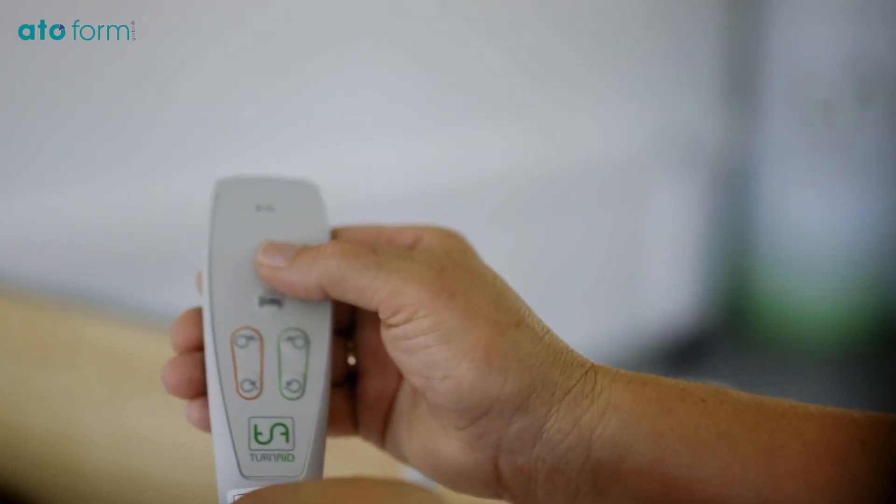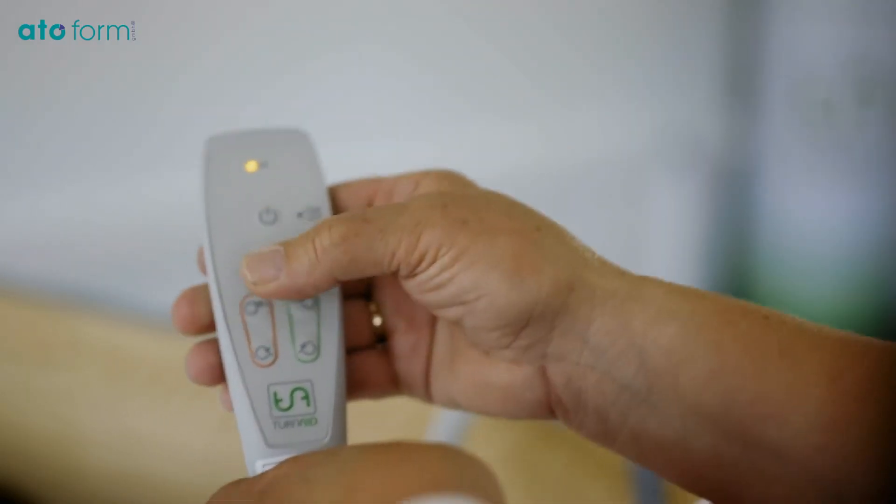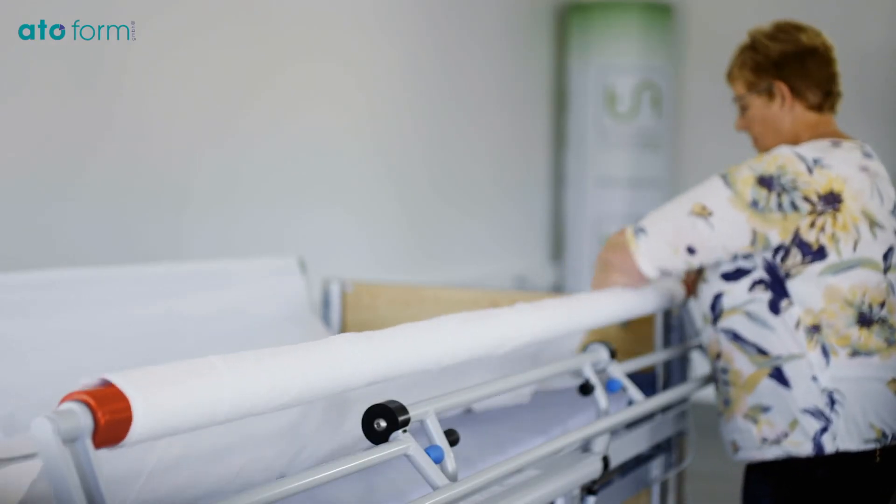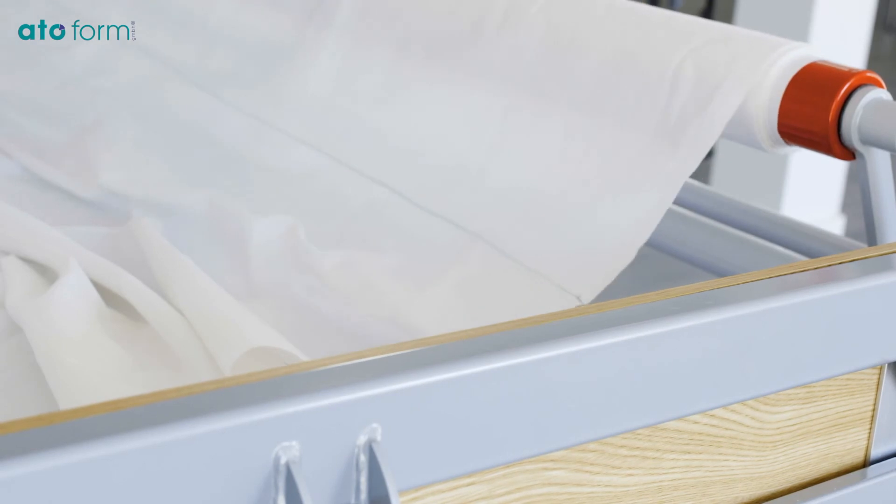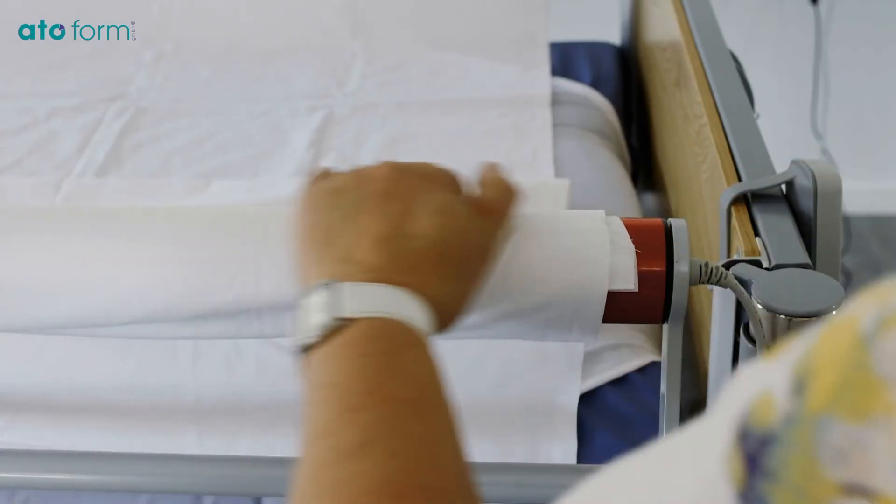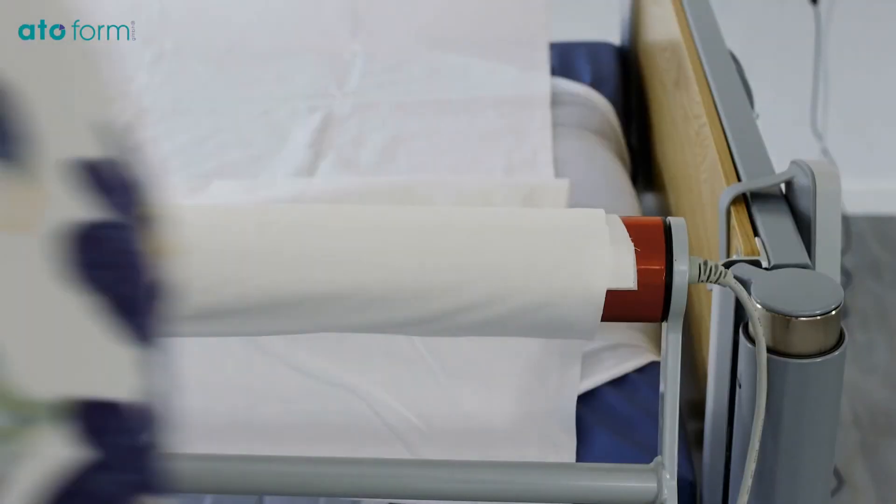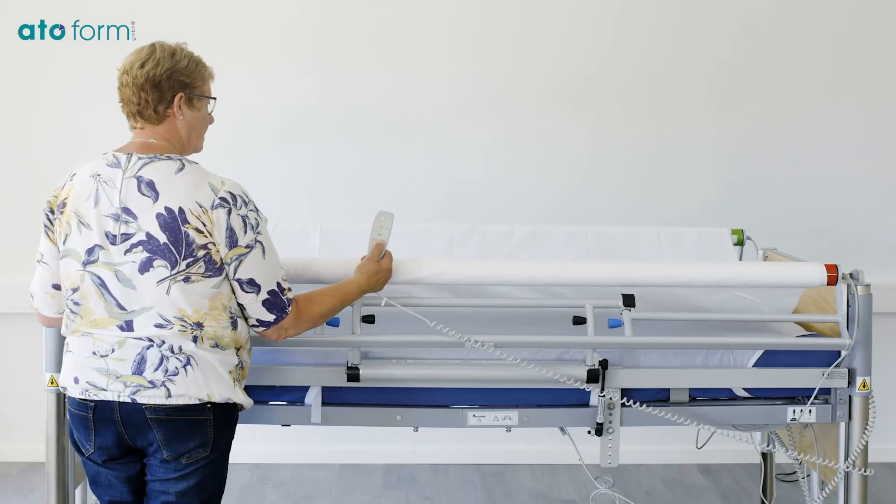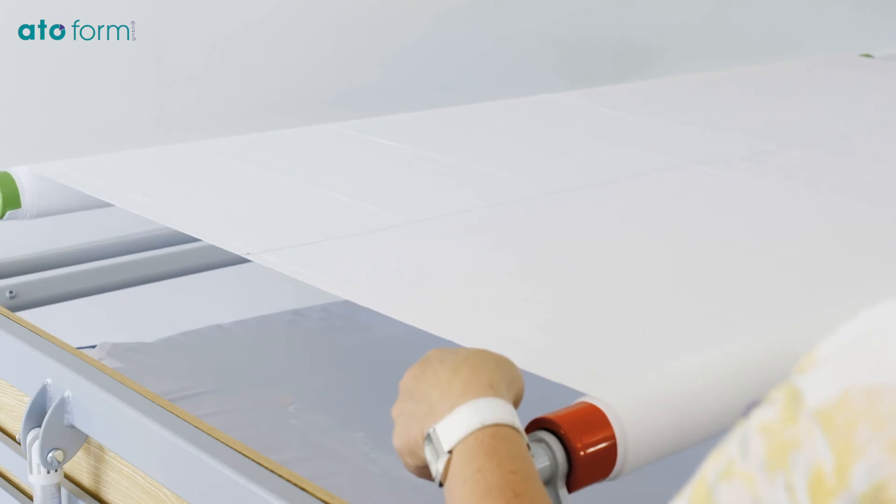Wind the sheet onto the red motor roll until the center marking on the sheet reaches the edge of the mattress. Wind the sheet onto the green motor roll. The center marking should be in the middle of the bed.